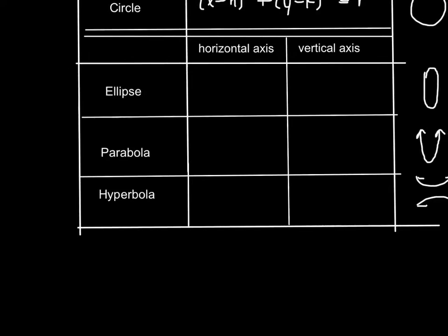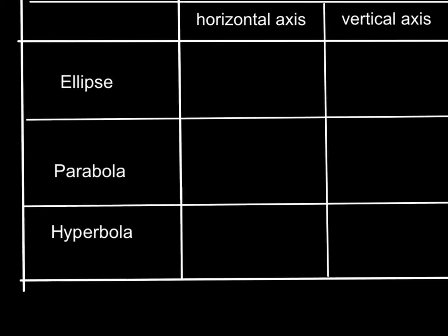We have two equations based on which one the ellipse or parabola is facing. For a horizontal axis of the ellipse, we have x minus h squared over a squared plus y minus k squared over b squared equals 1.